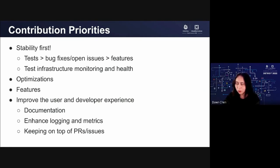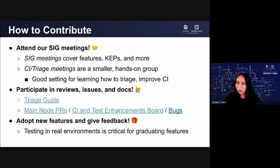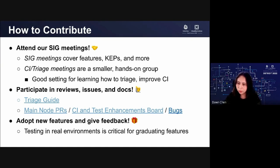How to contribute and get help if you are a user: you can attend our SigNode meetings. We have two regular SigNode meetings — one every Tuesday covering features, KEPs, designs, and issues, and one every Wednesday for CI and triage meetings, which covers user issues, bugs, and test failures. You can also join our Slack channel to ask questions, write proposals, and file bug issues. We also have a SigNode mailing list where you can send suggestions and feedback directly to us. Please reach out to us. Thank you.